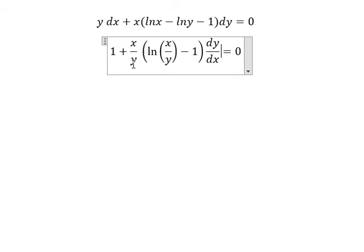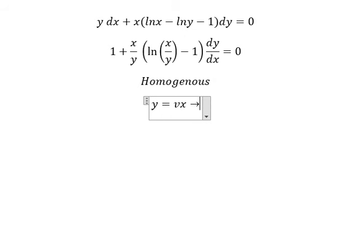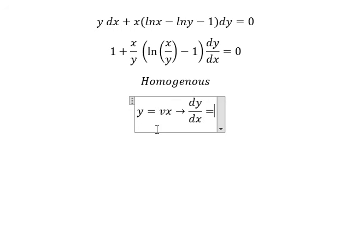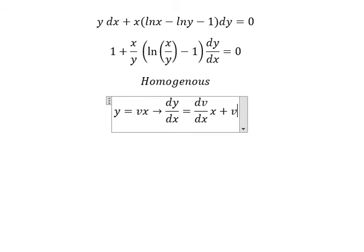So we have x over y — this is a homogeneous equation. I will put y equals to v times s. If we differentiate both sides, we have dy over dx equals to: differentiating v we get dv over dx, and differentiating x (s) we get one, so we have v in here.